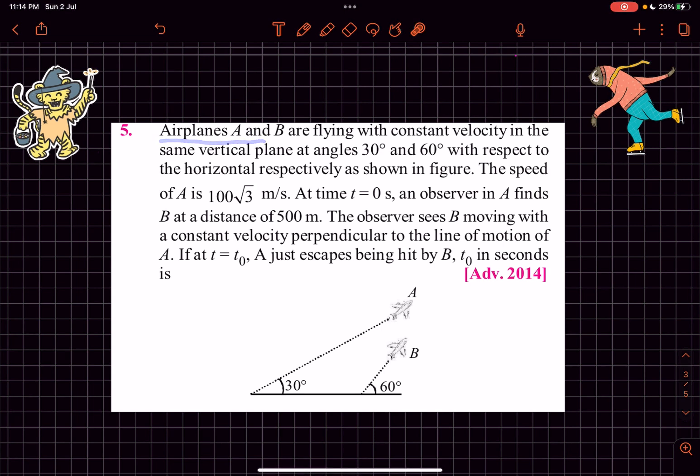In the problem we have two airplanes which are flying with constant velocity. They are in the same vertical plane. A is flying at an angle of 30 degrees, B is flying at an angle of 60 degrees. The speed of A is given, and at t equals 0, an observer in A finds B at a distance of 500 meters.